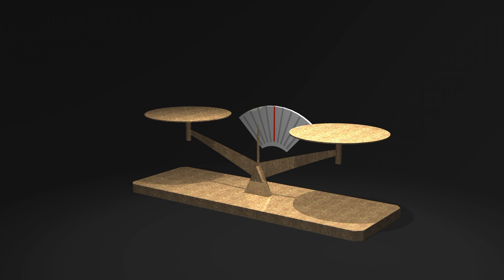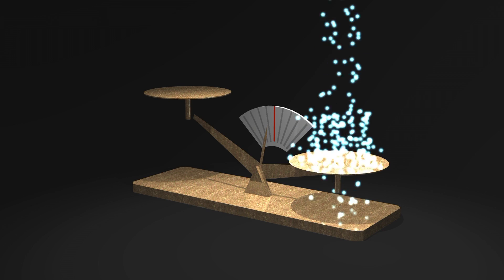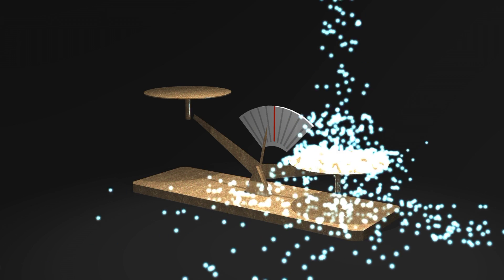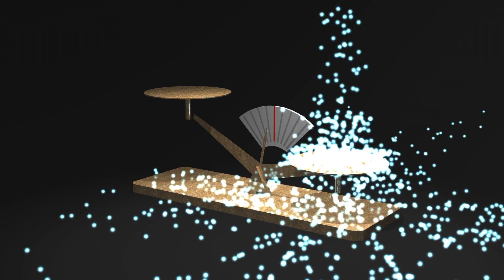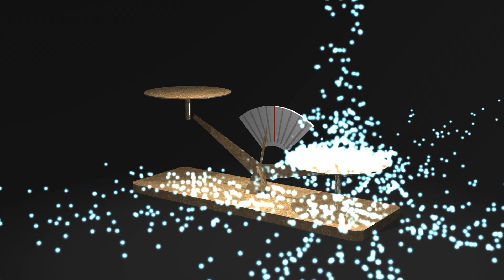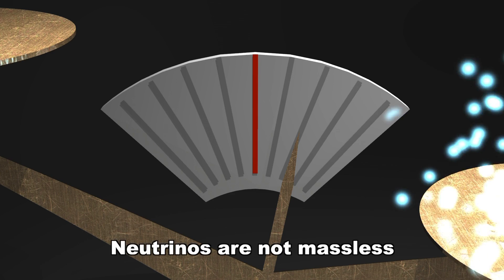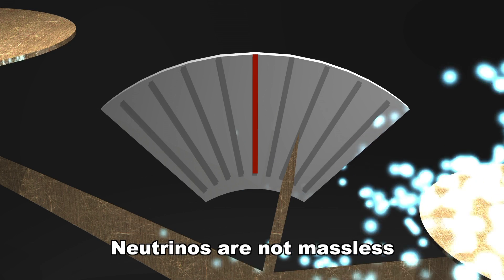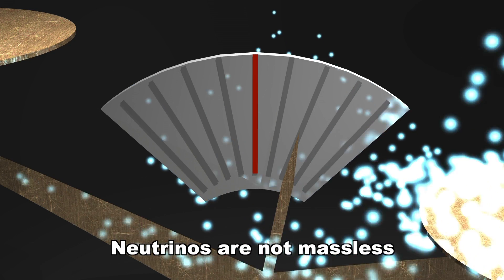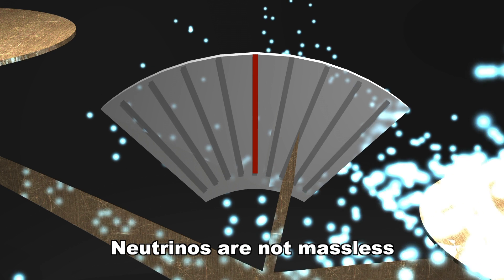It is only possible for neutrinos to oscillate into other flavors if they have mass. Mass is a measure of how much a particle weighs. In the standard model, neutrinos have zero mass. However, the existence of neutrino oscillations confirmed to us that neutrinos have very tiny but non-zero masses.